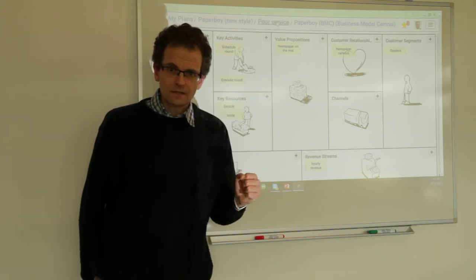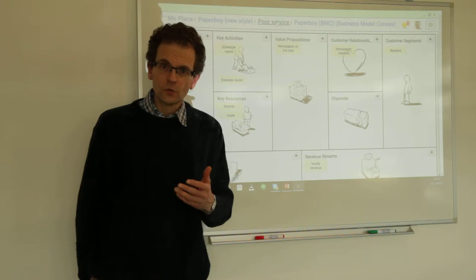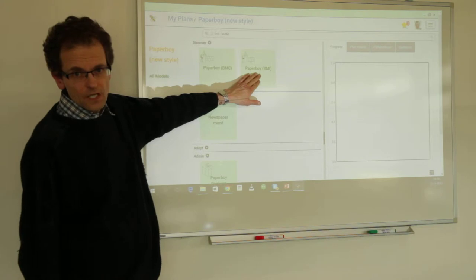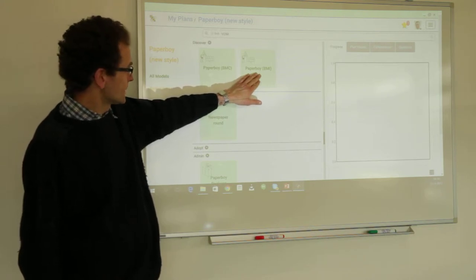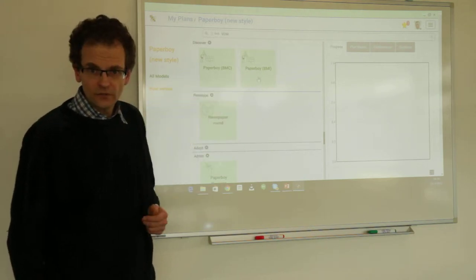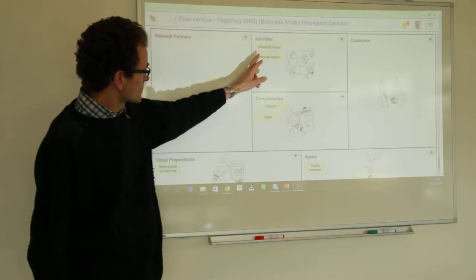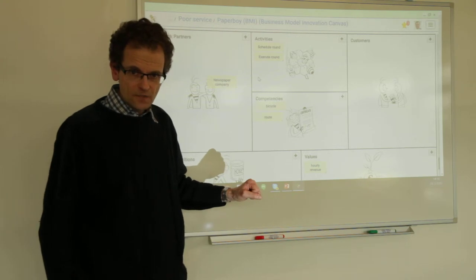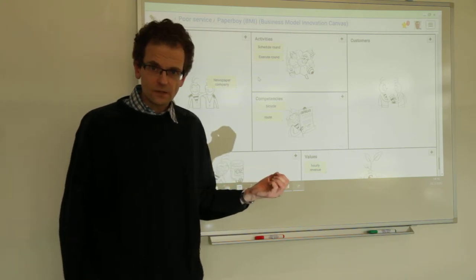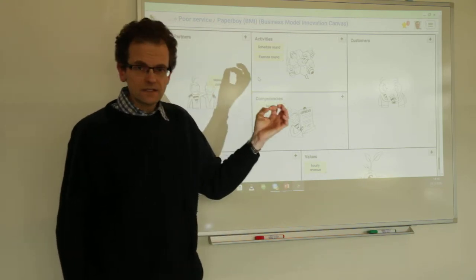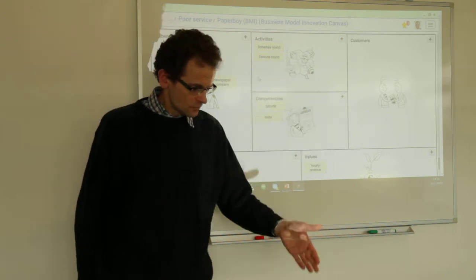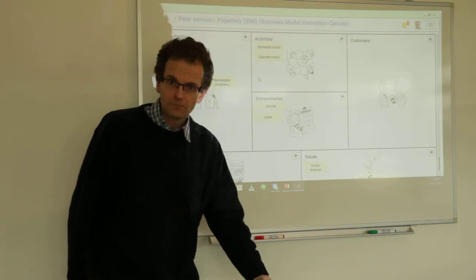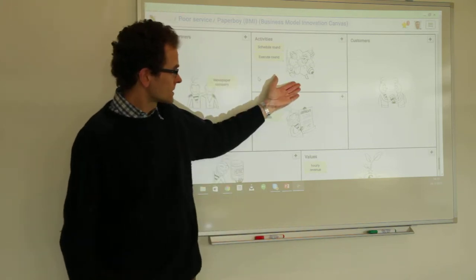We use that as an additional view on the same underlying business model. We introduced already in a previous session a so-called business model innovation canvas as invented by Peter Lindgren for this purpose. You can already see a couple of these yellow slips — these are the same elements as in the business model canvas, because we entered them in the business model canvas, mapped them into the business model, and now selected them back and mapped them upwards in the business model innovation canvas.